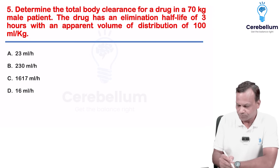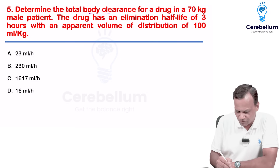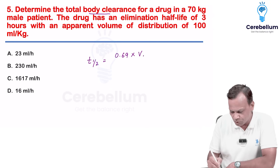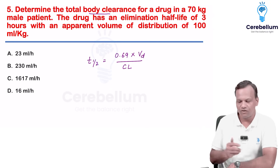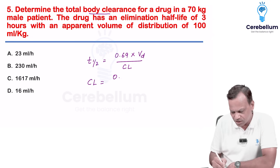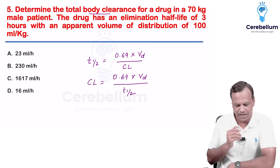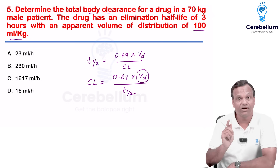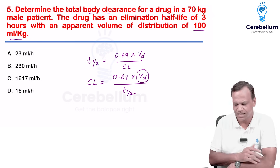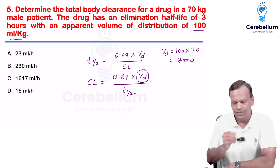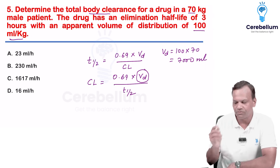Here we need to calculate clearance. The formula is: half-life = 0.693 × volume of distribution / clearance. Rearranging: clearance = 0.693 × volume of distribution / half-life. The drug has a volume of distribution of 100 mL/kg; the person weighs 70 kg, so volume of distribution = 100 × 70 = 7000 mL.